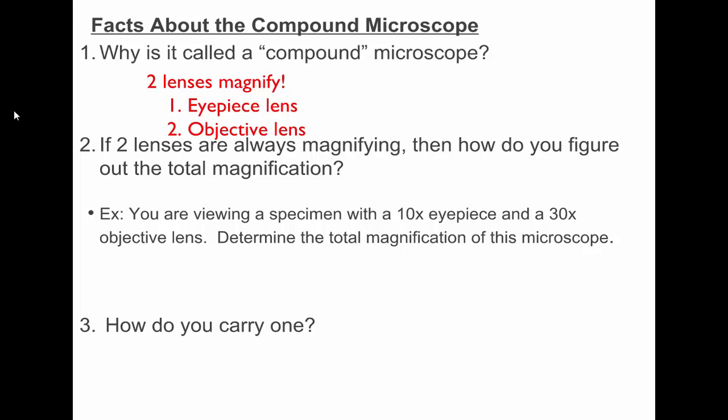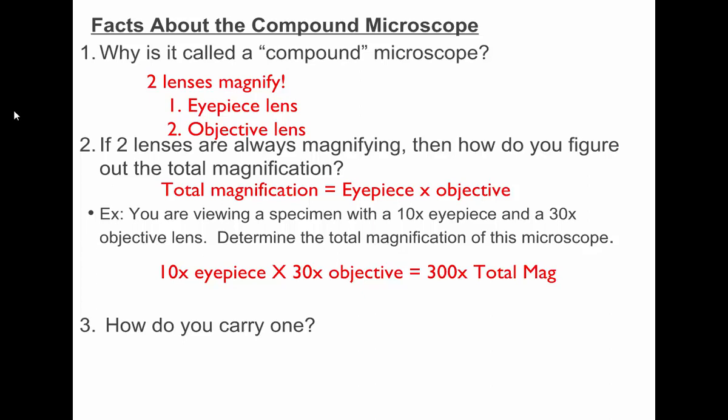One of the things you're going to have to do is calculate the total amount of magnification. The way that you're going to do that is you multiply the power of the eyepiece that you're using times the power of the objective lens you're using. For example, if I have a 10x eyepiece on my microscope and I have a 30x objective lens, what's my total magnification when I'm using that? Michael? 300. Yeah, 300. And what that means is what I'm seeing under the microscope is 300 times larger than its actual size. It's enlarging it 300 times.